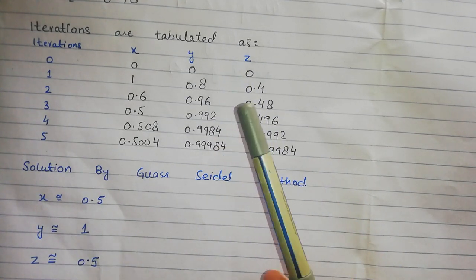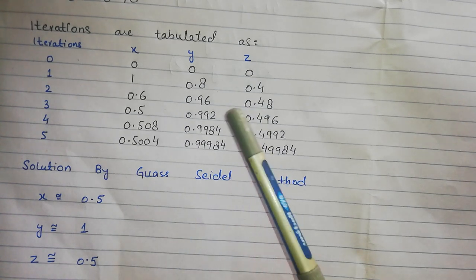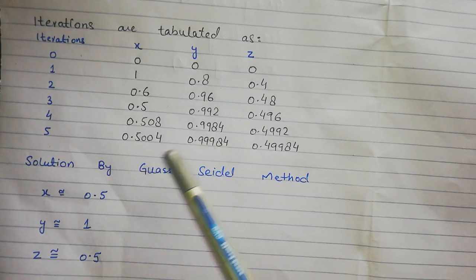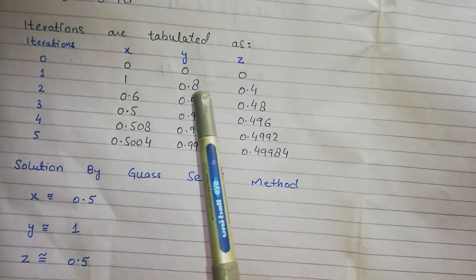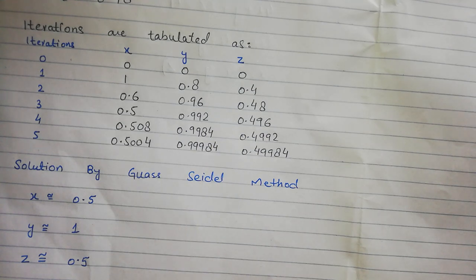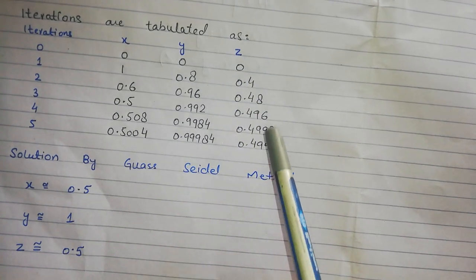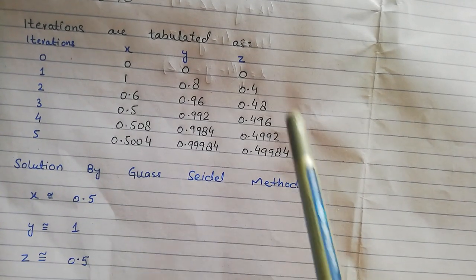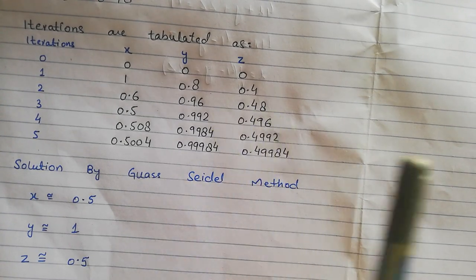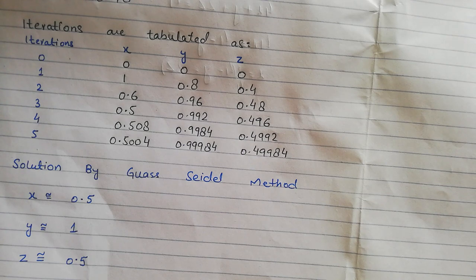Looking at the Y values: 0.8, 0.96, 0.99, 0.9984 — these are approaching 1. We can take the approximate value as 0.9 or round to 1, since out of 6 values, 4 are greater than 0.9. So the approximate value of Y is taken as 1. For Z, the values converge near 0.4 and approach 0.5. Since 4 out of 6 values are greater than 0.4, we take the approximate value of Z as 0.5.